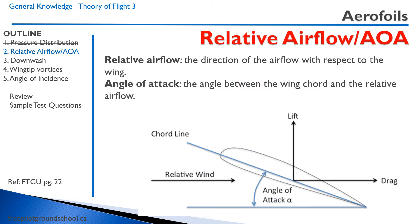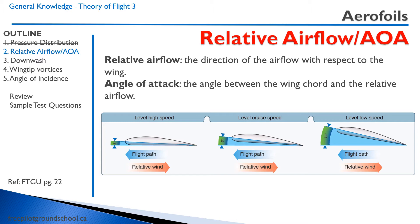We discussed this definition earlier, but I'll throw it in here again. The relative airflow is the direction of the airflow with respect to the wing, and the angle of attack is the angle between the wing cord and the relative airflow. Here's another picture explaining angle of attack — we can see angle of attack at three degrees. At high speeds in level flight, we're going to have a low angle of attack because most of our lift is coming from the high speed. At low speed on the far right side, we have a high angle of attack because we have less speed. Less speed means less lift, so we compensate by increasing the angle of attack.